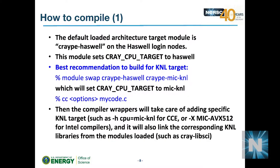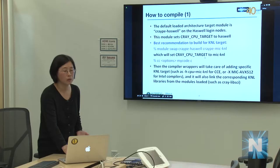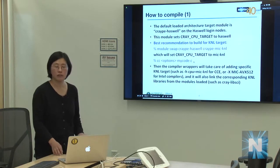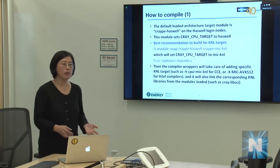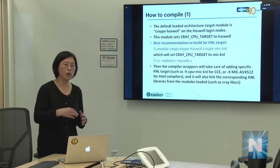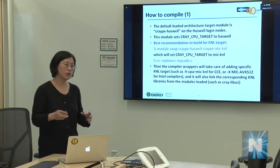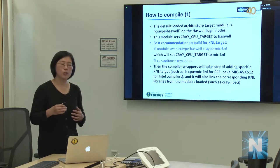To build a KNL-targeted binary on a Haswell login node, simply do 'module swap craype-haswell craype-mic-knl', then compile using the wrappers as usual. The wrapper takes care of the correct target architecture and links to the corresponding KNL libraries where available — whether Cray-provided or NERSC-provided.